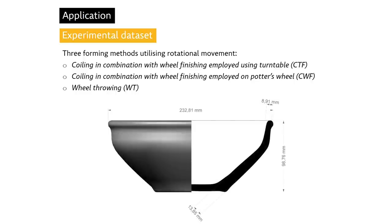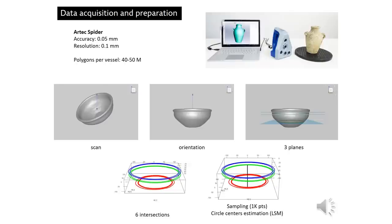A professional potter manufactured 10 S-shaped bowls by each of the forming methods. The height of the bowls was approximately 10 cm and their maximum diameter around 23 cm. All vessels were scanned in 3D with an Artec Space Spider scanning device, which scans with an accuracy of 50 microns and a resolution of 100 microns. The number of polygons on one vessel varied between 40 and 50 million triangles. Each 3D model was manually oriented, and then three horizontal planes were defined: at the level of the neck, at the maximum diameter, and at the lower part of the body.